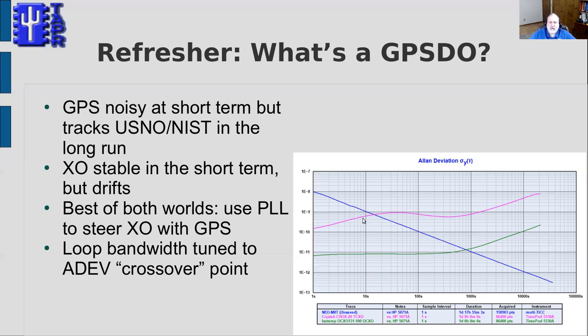With a low quality oscillator the crossover happens at a shorter time interval — about 15 seconds. With a higher quality oscillator the crossover happens later, and you need a much narrower loop bandwidth to take advantage of that.